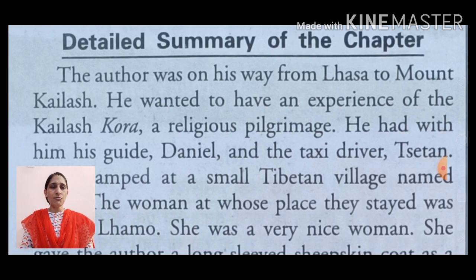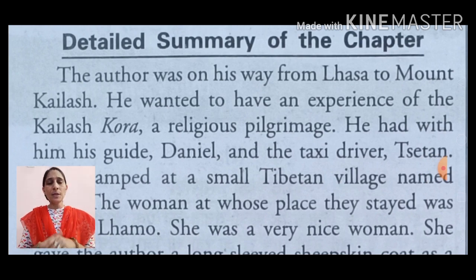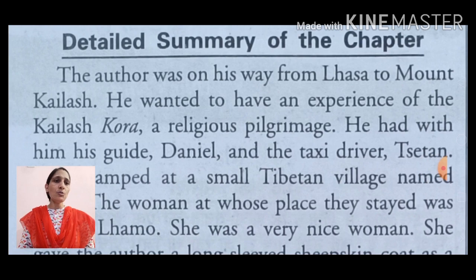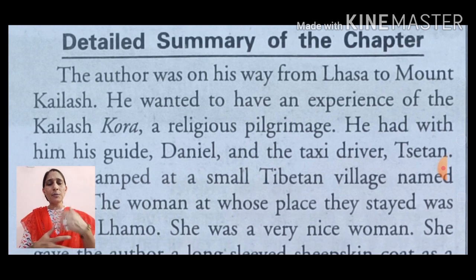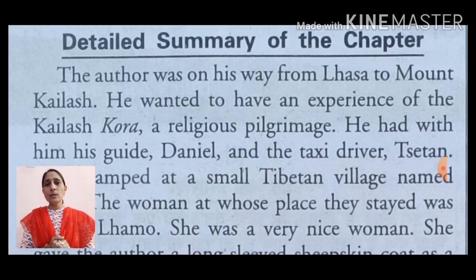The author was on his way from Lhasa to Mount Kailas — लेखक अपने मार्ग पर था, Lhasa से शुरू किया था और Mount Kailas जा रहा था। He wanted to have an experience of the Kailas Kora — वो एक अनुभव प्राप्त करना चाहता था। Means जो धार्मिक परिक्रमा थी — Mount Kailas के चारों तरफ धार्मिक purpose से जो उसे यात्रा करनी थी, उसका अनुभव प्राप्त करना चाहता था, जो कि एक धार्मिक यात्रा थी।